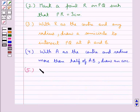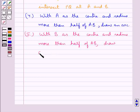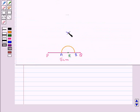In the same way, with B as the center and radius more than half of AB, we draw another arc. We draw an arc intersecting the previous arc at point S. This point of intersection of the two arcs is S.